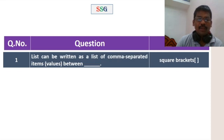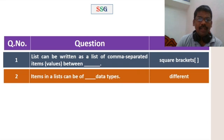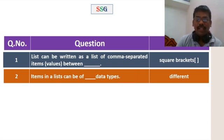List: A list can be written as a list of comma-separated items or values between square brackets. The listing symbol used is square brackets. Items in a list can be of different data types — for example, integer, float, and string.